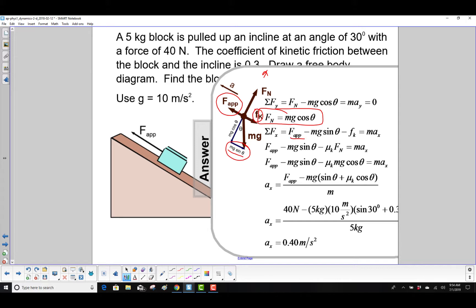So applied force, minus gravity, again in the x direction going down the incline, minus kinetic friction. Now what is kinetic friction equal to? Well that's mu k times the normal. And here's our normal force right here.